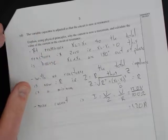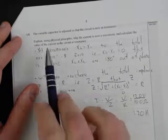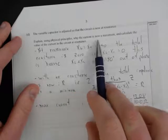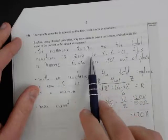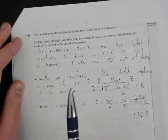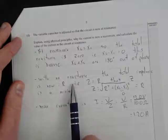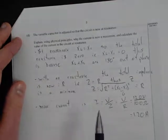Just checking that we've answered the question: explain using physics principles why the current is now maximum. We've said that the total reactance is now zero, so minimum impedance gives us maximum current.